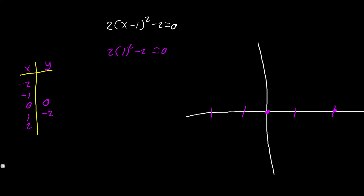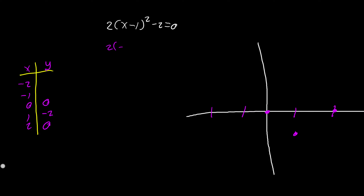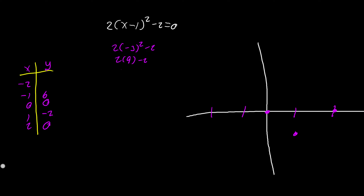So we have our second solution point there, and our first point is at y = -2. Those are our two solutions. We're also going to look at x = -1: we get 2(-2)² - 2, which is 2 times 4 minus 2, and 8 - 2 equals positive 6. For x = -2 we get 2(-3)² - 2, giving us 2 times 9 minus 2, which is 18 - 2 = positive 16.